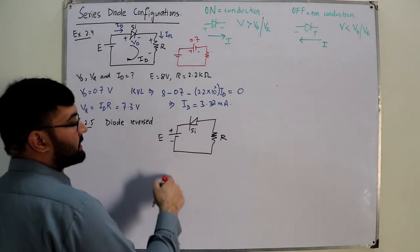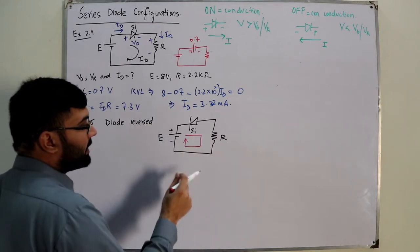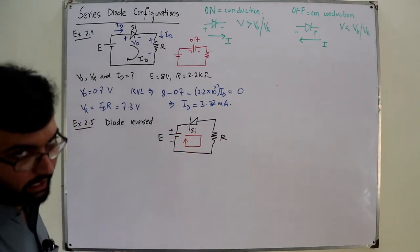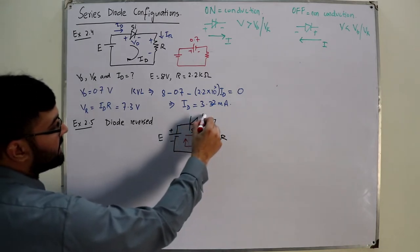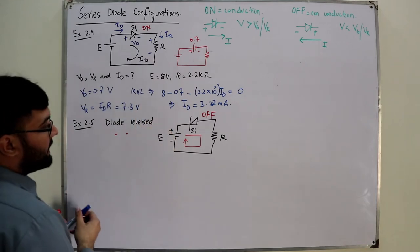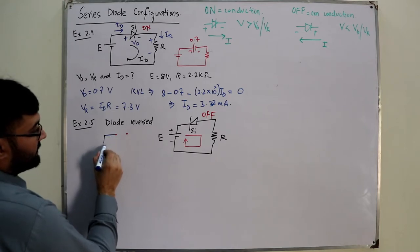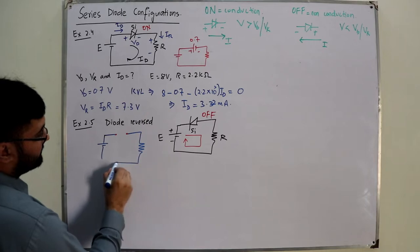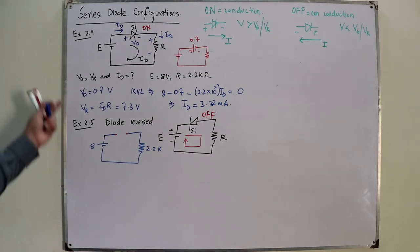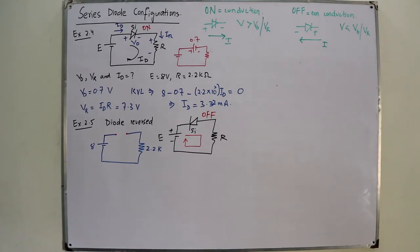With the diode reversed, the conventional current direction is opposite to the diode arrow, so the diode is in the off state. In this case, we replace the diode with an open circuit equivalent. The circuit has E = 8 V and R = 2.2 kΩ, and we need to find VD, VR, and ID.